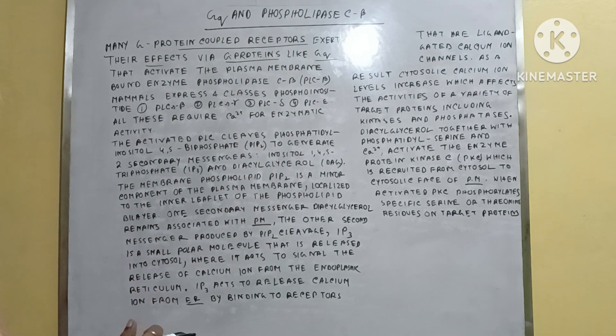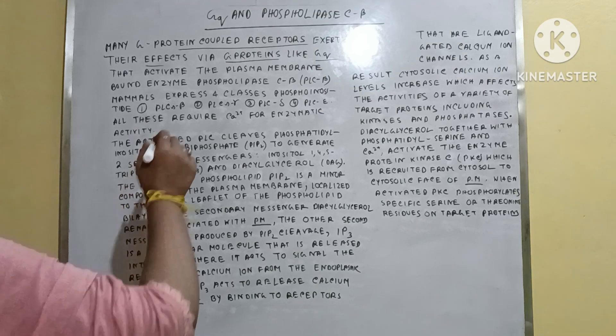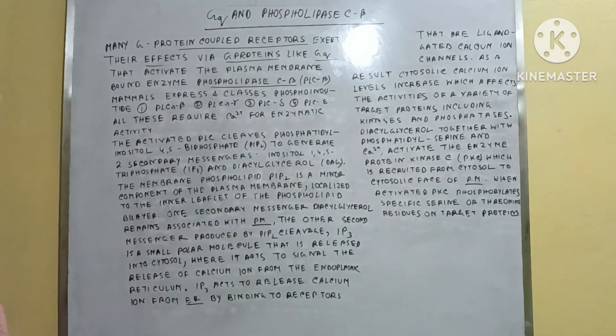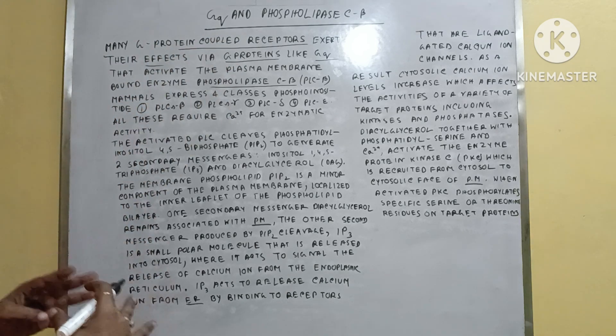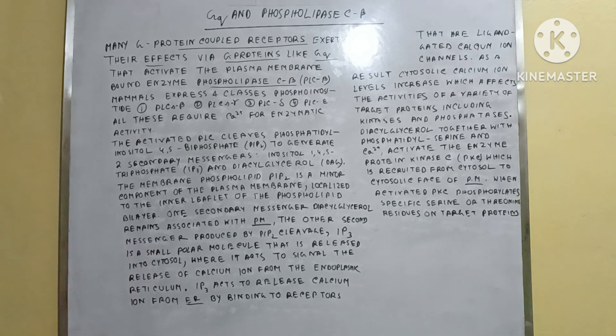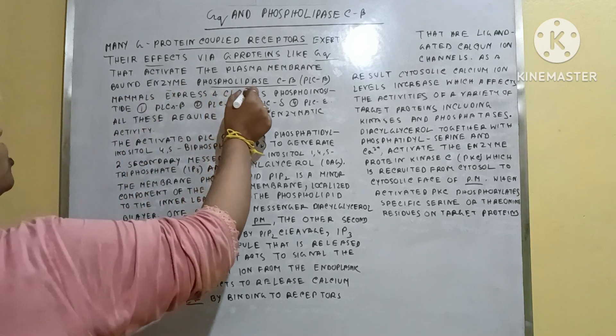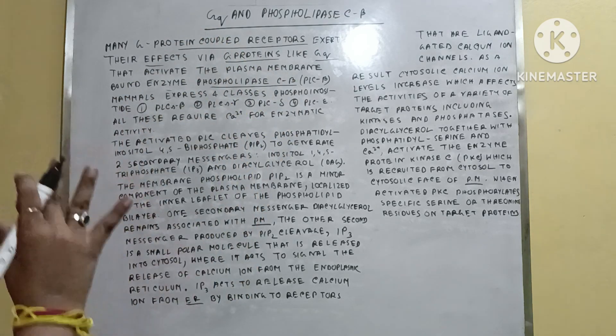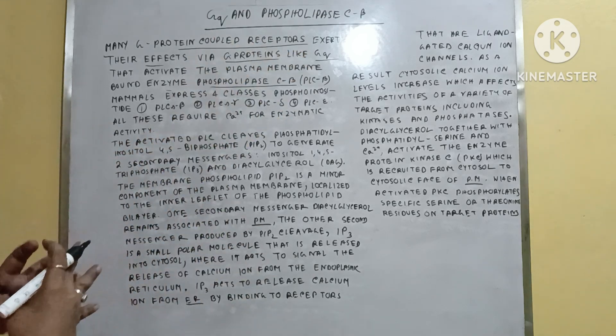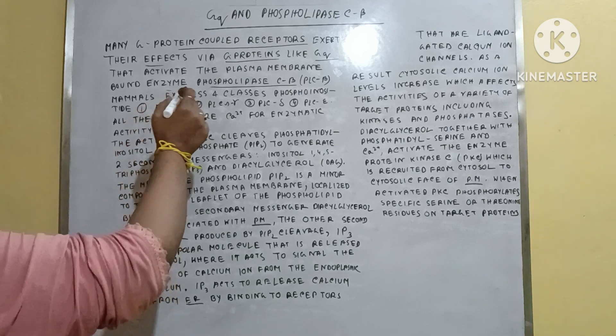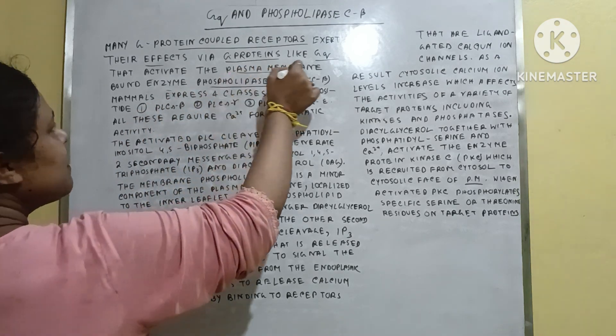GQ activates the plasma membrane-bound enzyme Phospholipase C beta (PLC beta). When G protein binds with the GPCR, the GPCR and G protein become activated. In that situation, they activate the enzyme Phospholipase C beta. So GPCR and G protein GQ, when they attach to each other, activate Phospholipase C beta present in the plasma membrane.